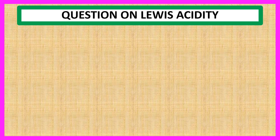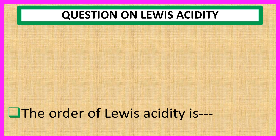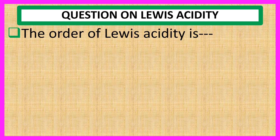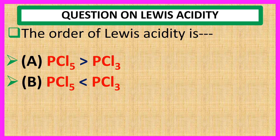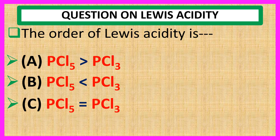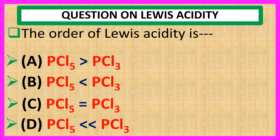Welcome everyone. Question on Lewis acidity. The order of Lewis acidity is — choices are: A. PCl₅ greater than PCl₃. B. PCl₅ less than PCl₃. C. PCl₅ is equal to PCl₃. And D. PCl₅ less than less than PCl₃.